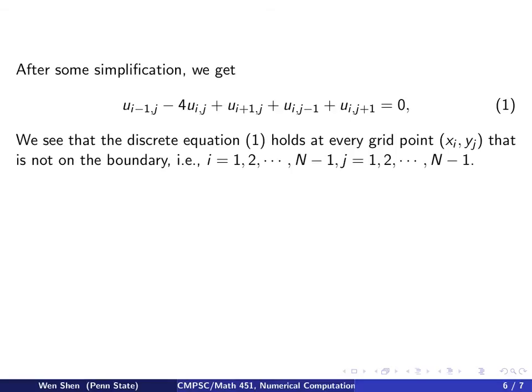This is called the discrete Laplace equation, and we see that this one holds at every grid point x_i, y_j which is not on the boundary. Because if it's on the boundary, then you would need some number outside the domain, so you can't do that. So i would run from 1 to N minus 1, and so would j. In the end, this gives us (N-1) times (N-1) equations.